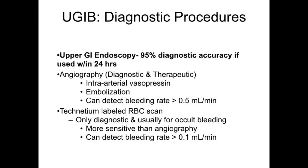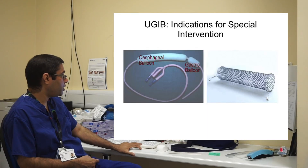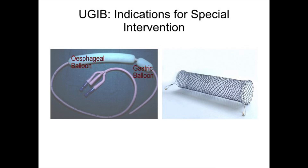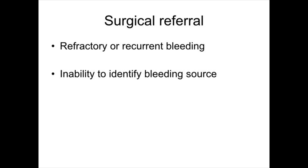Other tests include technetium-labelled red blood cell scans, usually done for occult bleeding where no obvious source has been found on initial endoscopy, CT angiogram, or interventional radiology. Special interventions include the Sengstaken-Blakemore tube and a Danis stent to control bleeding, particularly for varices. Surgical referral should be sought if there is recurrent or refractory bleeding that cannot be stopped, or if there is an inability to identify a bleeding source.